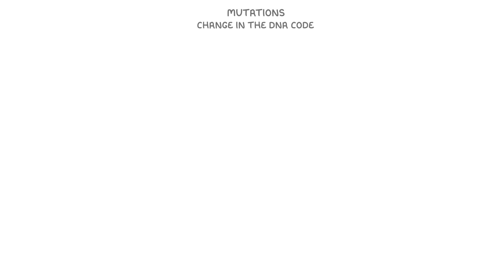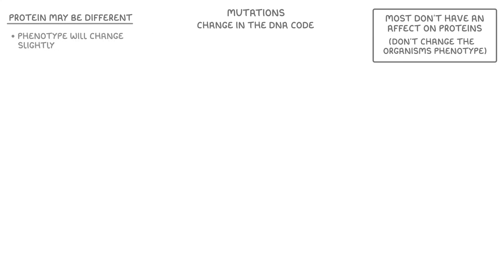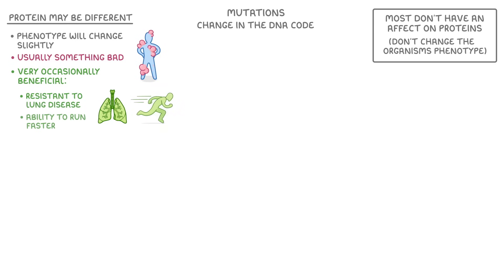But why is there so much genetic variation? The reason there are so many different genes is because of mutations. A mutation is a change in the DNA code, so that the protein it codes for may be different. Keep in mind that most mutations don't actually have any effect on the proteins, and so don't change the organism's phenotype at all. However, in those cases where mutations do change proteins, the phenotype may change slightly. This change will usually be something bad and unwanted, but very occasionally the mutations are beneficial — for example, they could make us more resistant to lung disease, or give us the ability to run faster.